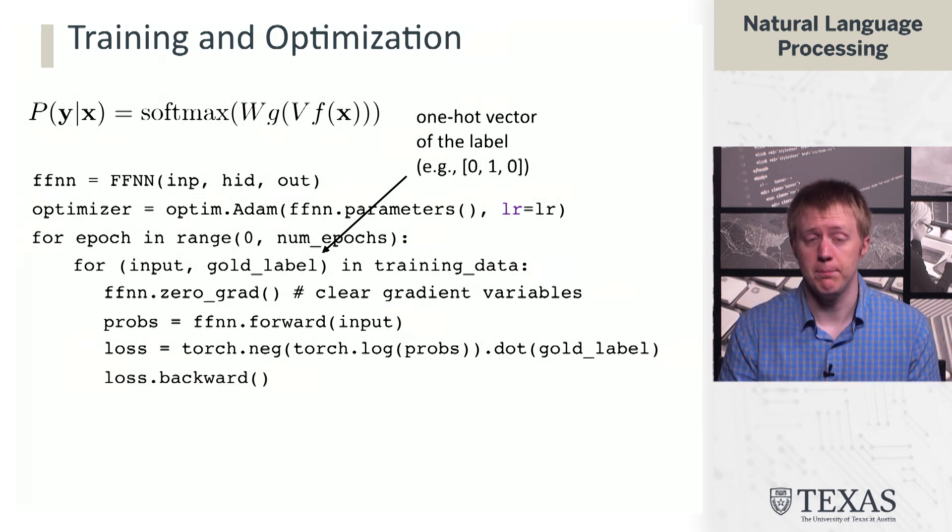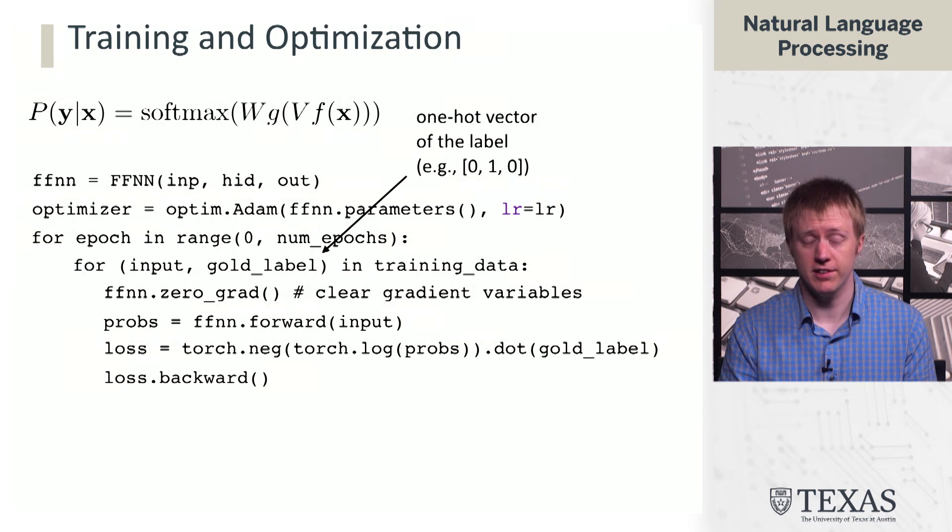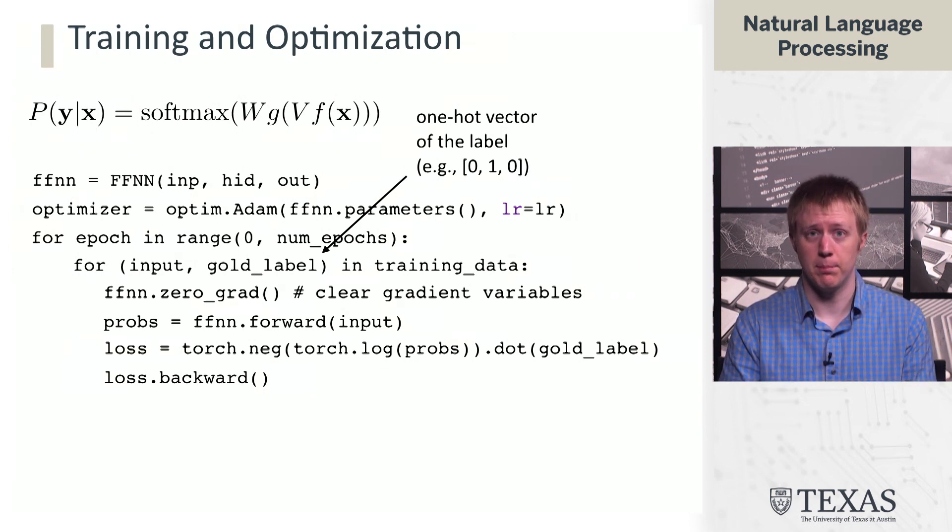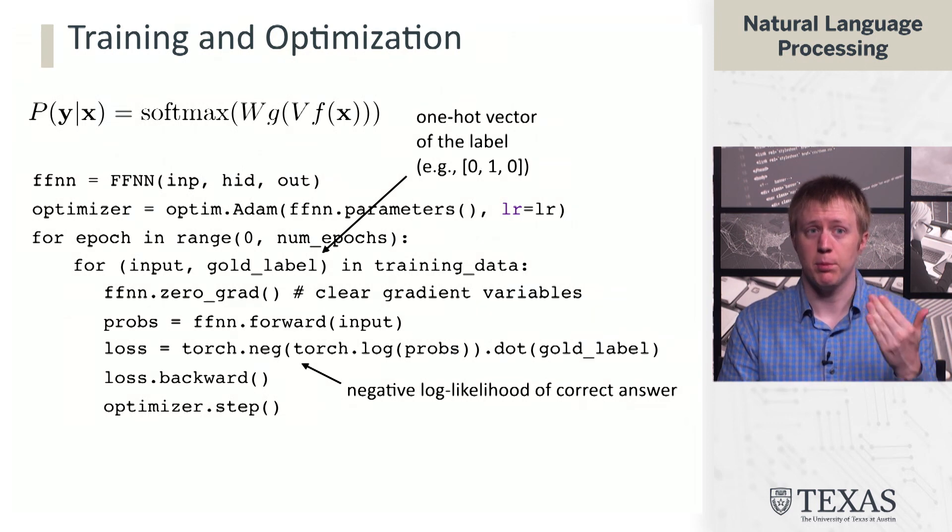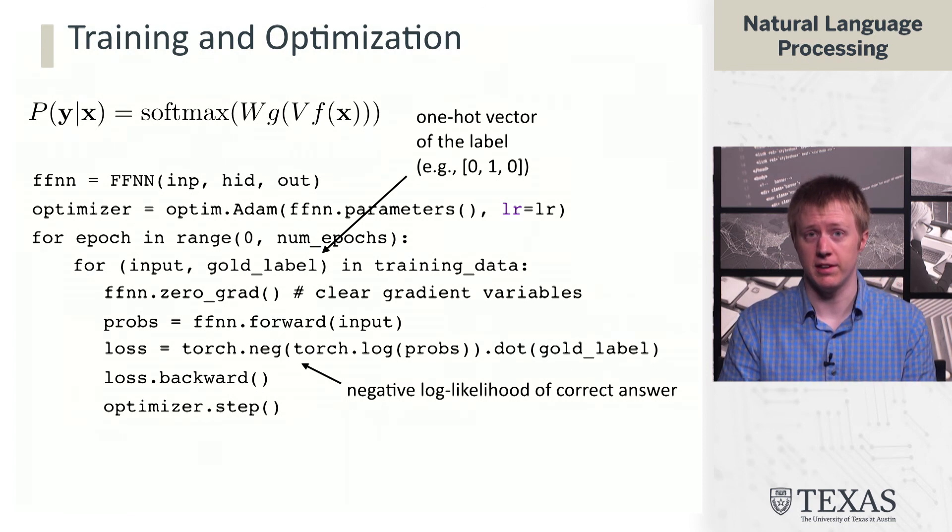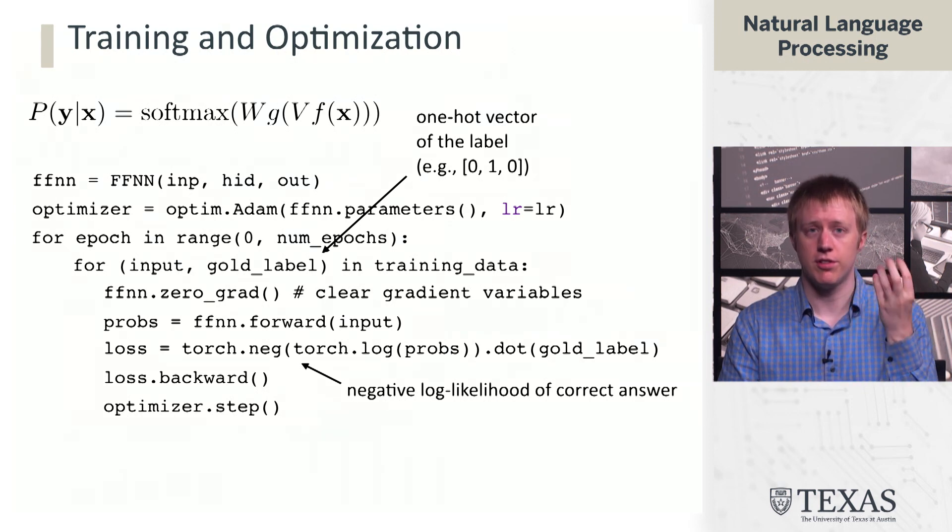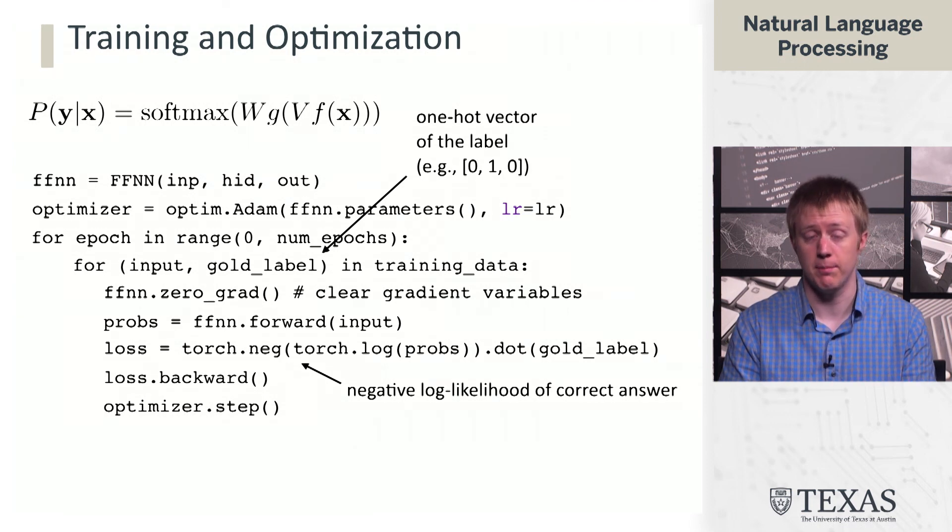And then we call dot backward on this loss. What this does is this computes the gradient of the loss with respect to all of the parameters of the network. And then we take a step with the optimizer. Now the step, it's responsible for optimizing all of the parameters of this network. When we call optimizer dot step, it will use the Adam optimizer based on the gradients that were just computed as part of this loss dot backward operation and apply our gradient update.